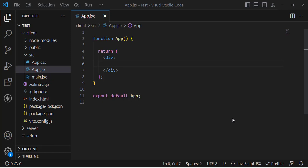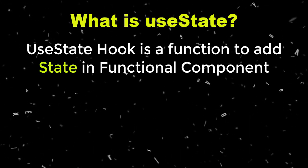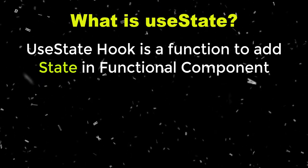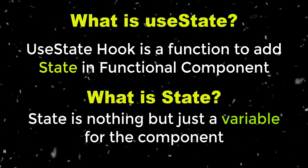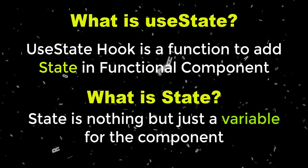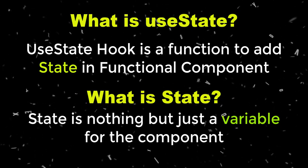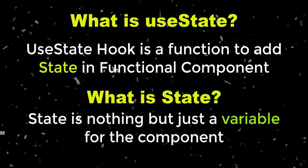If you are looking for a video to clear your concept about the useState hook — how to use it, how to define it, and what is going on behind it — in this video you will learn all these concepts. Before everything, let's define it: the useState hook is a function which adds state to your functional component. State is just a value or variable that you are adding to your component. We will create three examples: a counter, input fields, and objects.